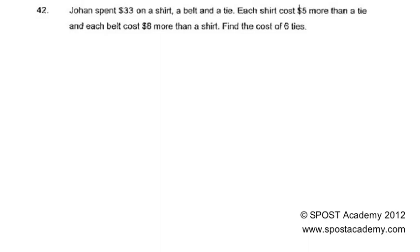Johan spent $33 on a shirt, a belt, and a tie. Each shirt cost $5 more than a tie, and each belt cost $8 more than a shirt. Find the cost of 6 ties. We have to start by drawing a model.